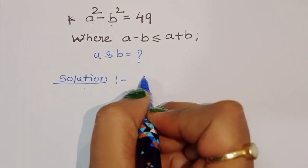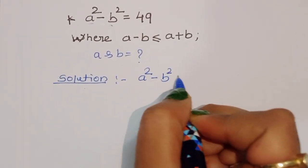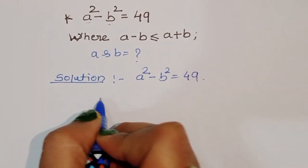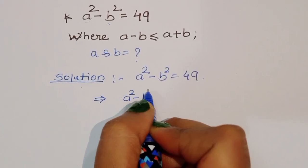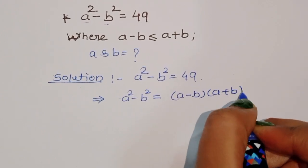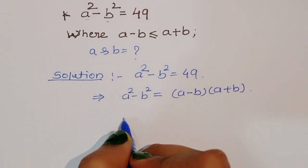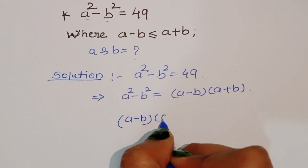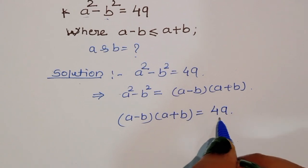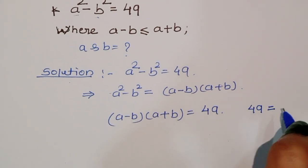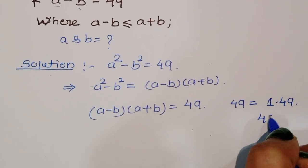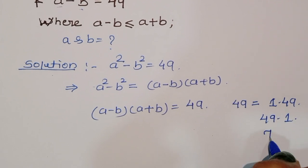First, what is given? A squared minus b squared is equal to 49. We can write this using the formula: a squared minus b squared equals a minus b times a plus b. Now we can look at the factors of 49: 1 times 49, 49 times 1, and 7 times 7.